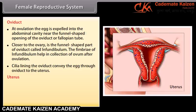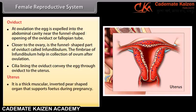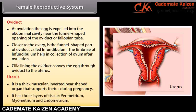The uterus is a thick muscular, inverted pear-shaped organ that supports the fetus during pregnancy. It has three layers of tissue: the perimetrium, the myometrium, and the endometrium.